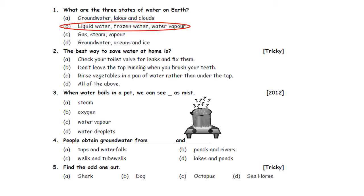Question two: The best way to save water at home is: A. Check your toilet valve for leaks and fix them. B. Don't leave the tap running when you brush your teeth. C. Rinse vegetables in a pan of water rather than under the tap. D. All of the above. The answer is D, all of the above. We need to check toilet valves for leaks and fix them. Don't leave the tap running when brushing your teeth — switch off the tap. Rinse vegetables in a pan rather than under a flowing tap.